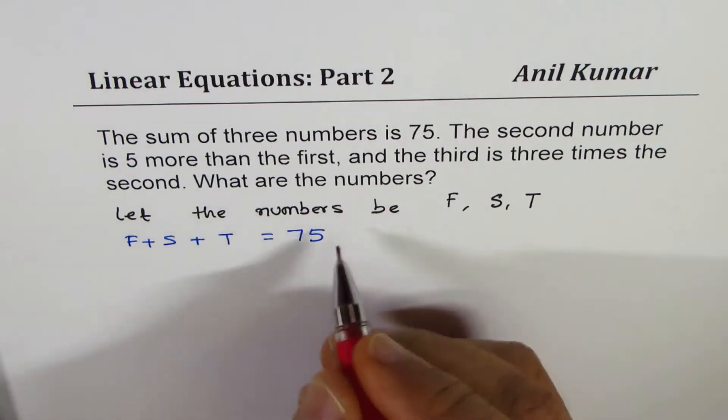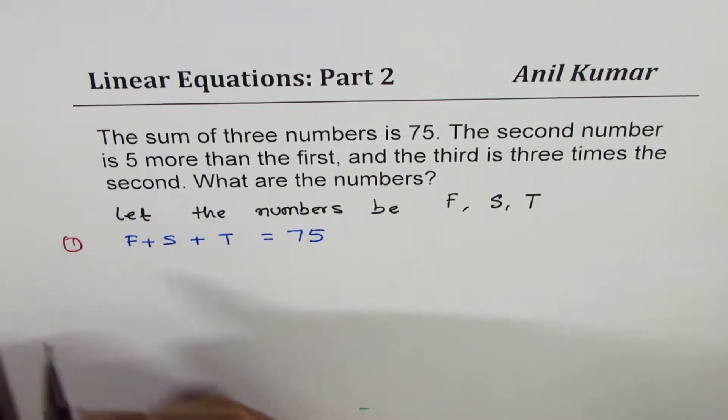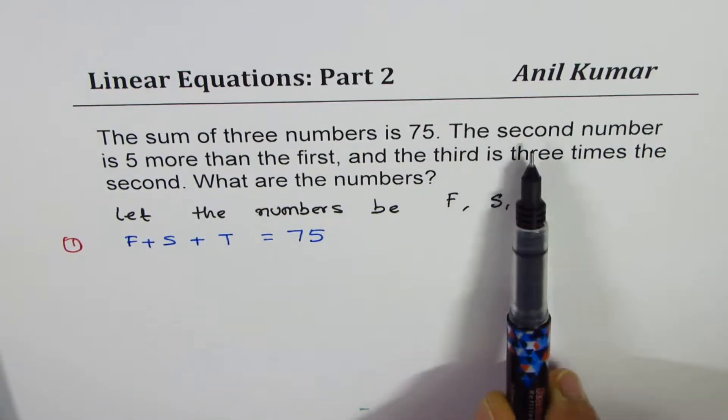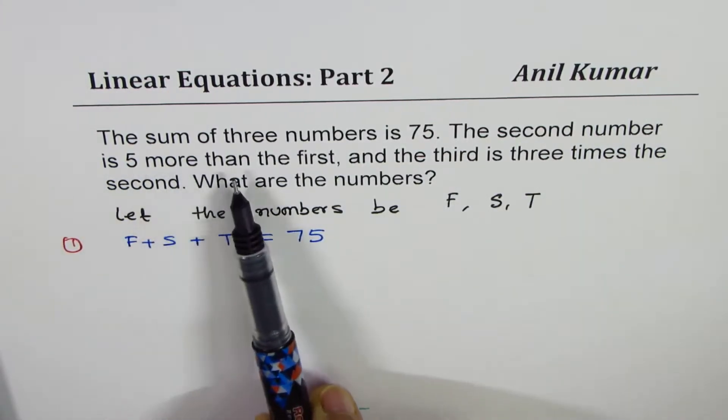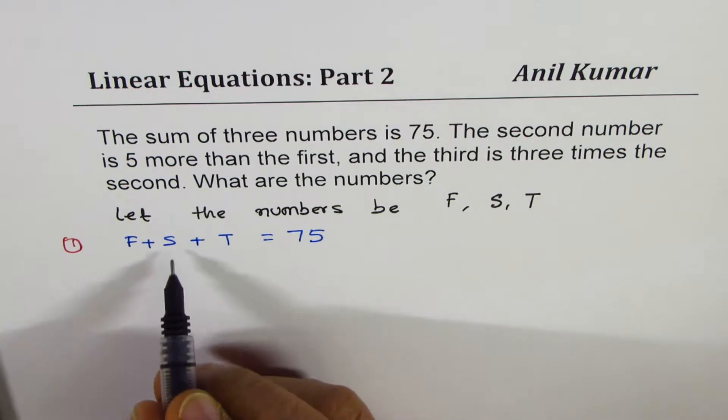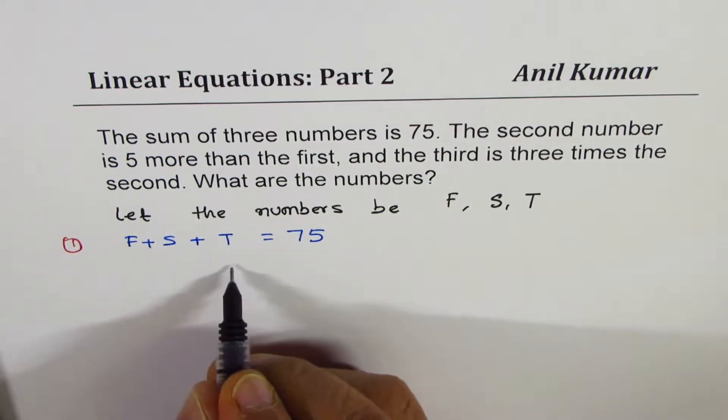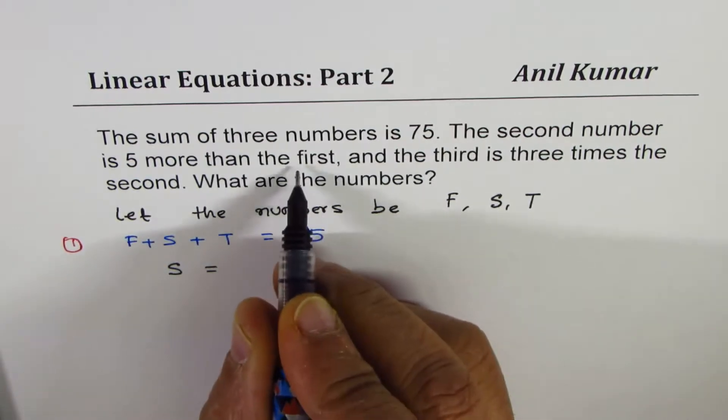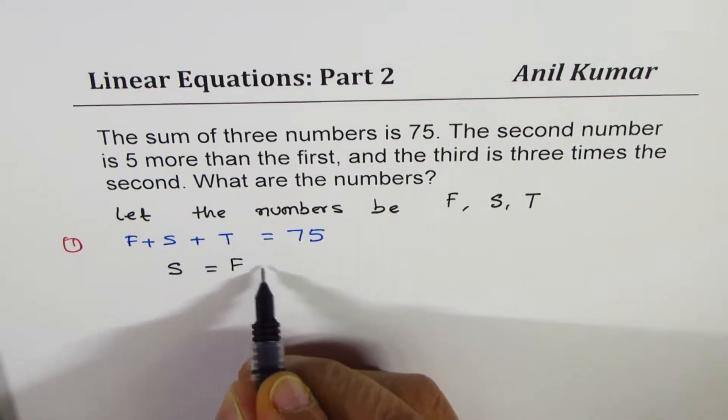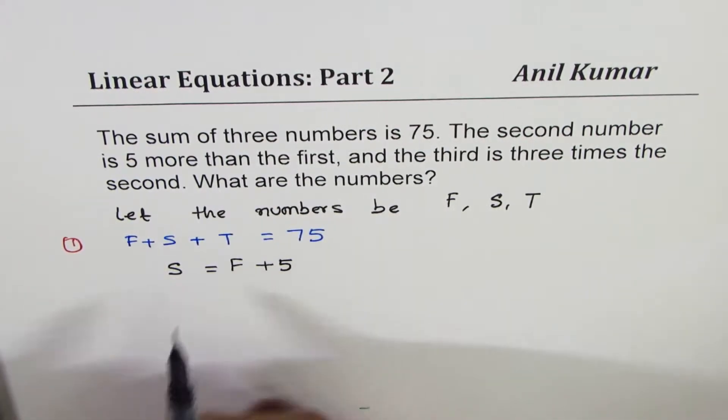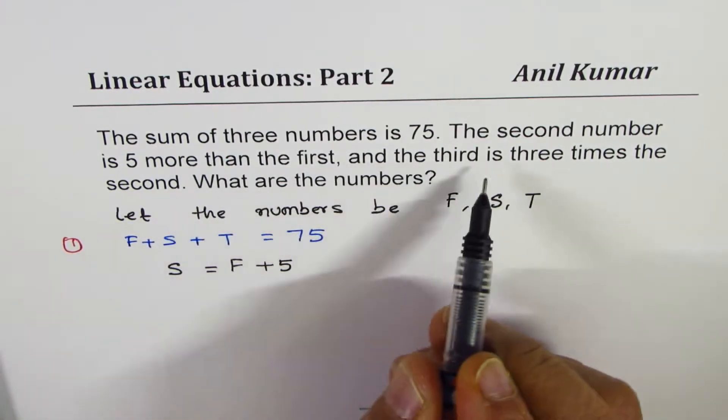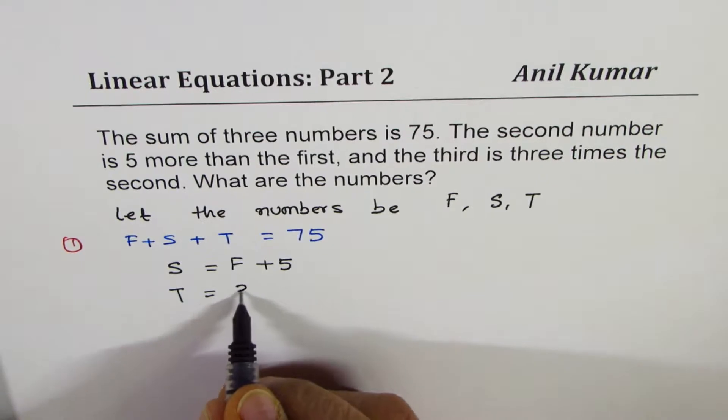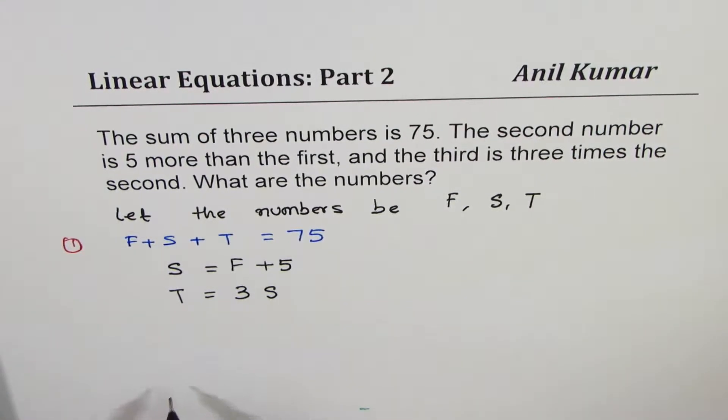The second number is five more than the first, so S = F + 5. The third is three times the second, so T = 3S. You've got two more equations here.